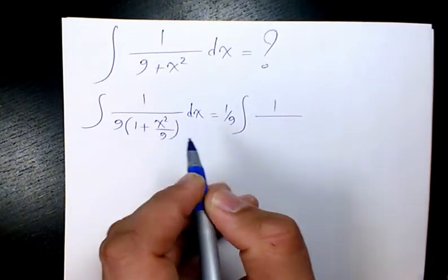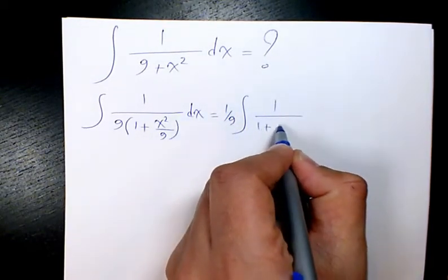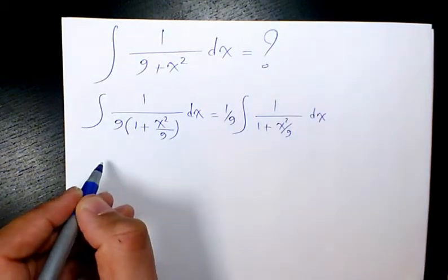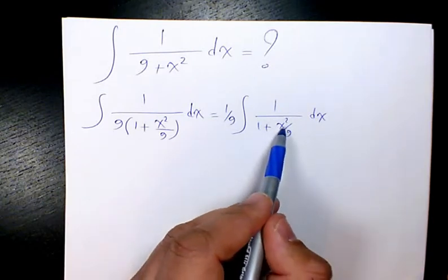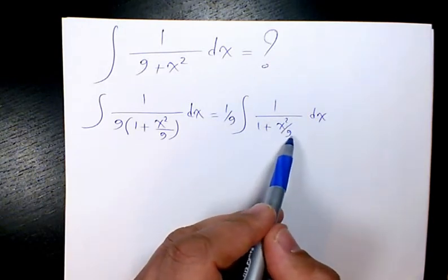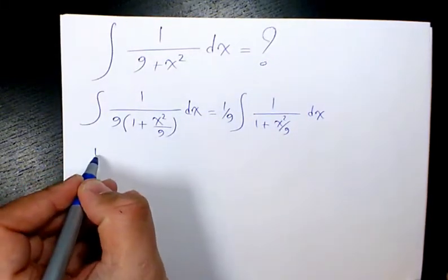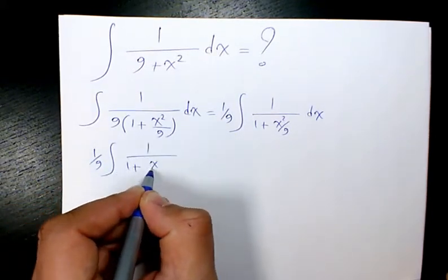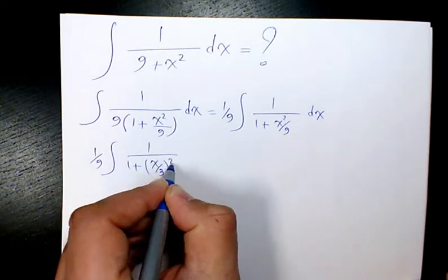Here we have x² and we have 9. Nine is 3 squared, so I will change it to the integral of 1/(1 + (x/3)²) dx.